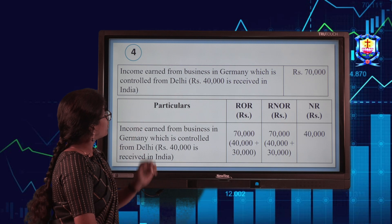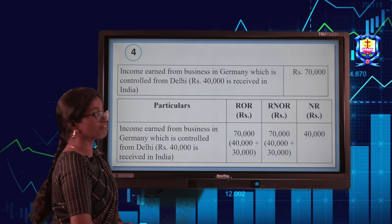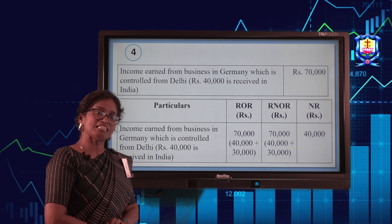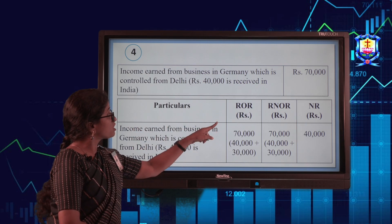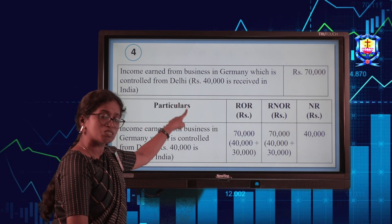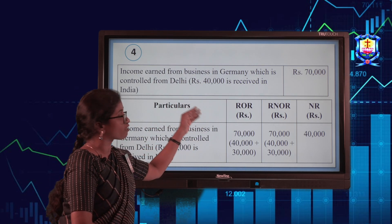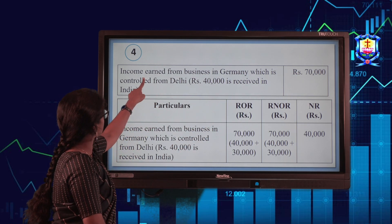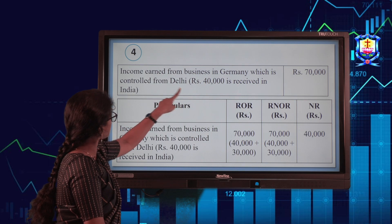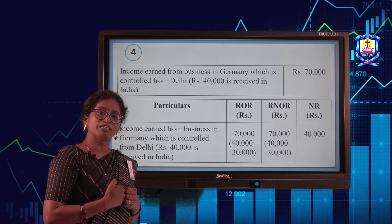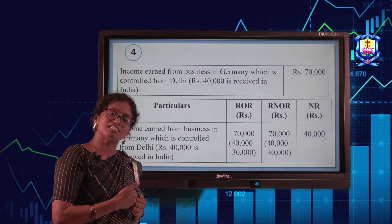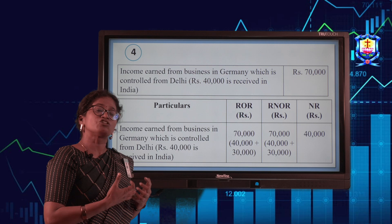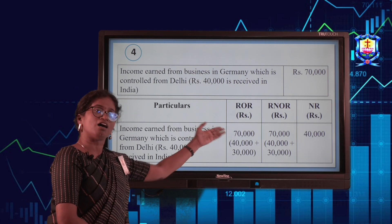Next case: income earned from business in Germany which is controlled from Delhi, totalling 70,000, with 40,000 received in India. The 40,000 received in India is Indian income, taxable for all three categories — ROR, RNOR, and NR. For the remaining 30,000: since the business is controlled from Delhi, it is also taxable for RNOR. Of course for ROR, global income is taxable. So the remaining 30,000 is taxable for both ROR and RNOR.